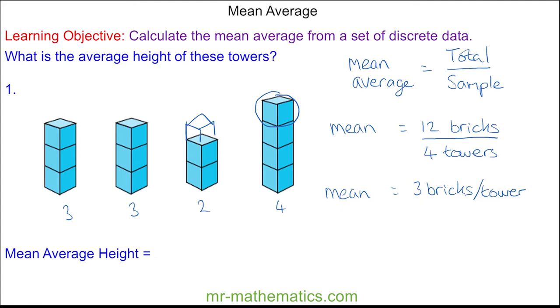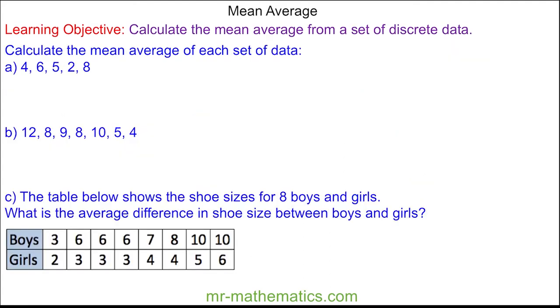Okay, let's move on. We're going to calculate the mean average of the data set in question a. We work out the total, which is the sum of the data, and this is 25. The sample size is five because we have five pieces of data. So the mean average is 25 divided by 5, which is 5.